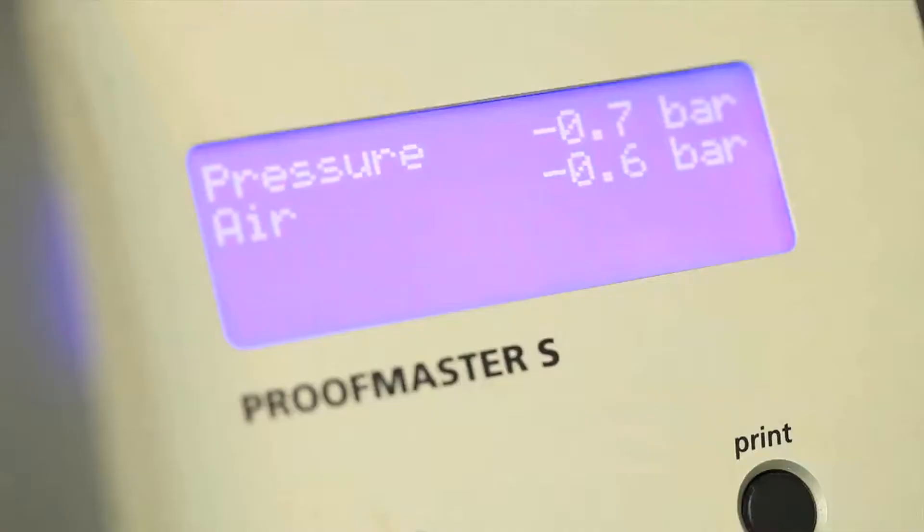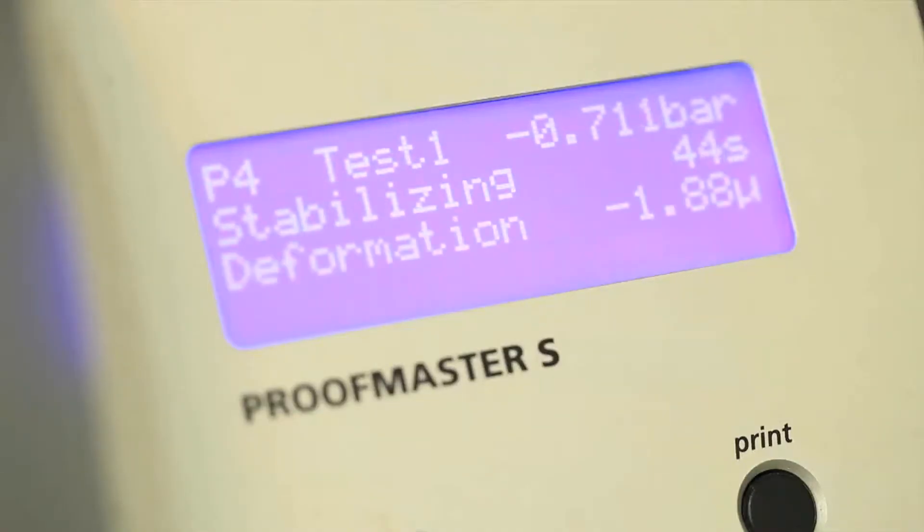The machine itself verifies the water resistance using a two-step process consisting of vacuum and positive pressure. While what happens inside the machine may be thought of as complicated, the process of running the test is actually quite simple.